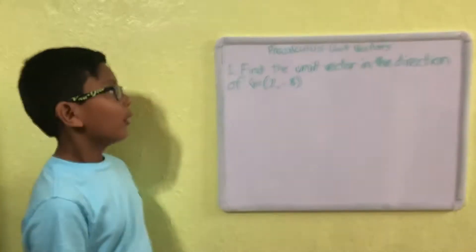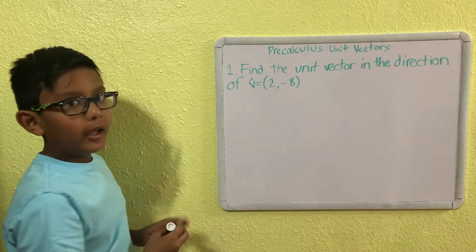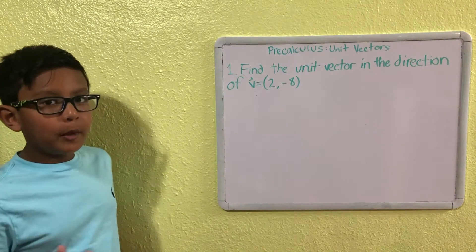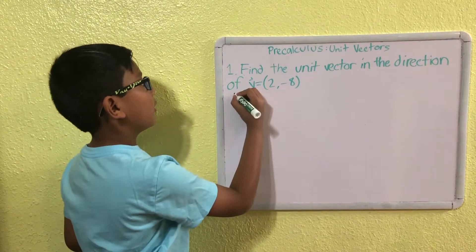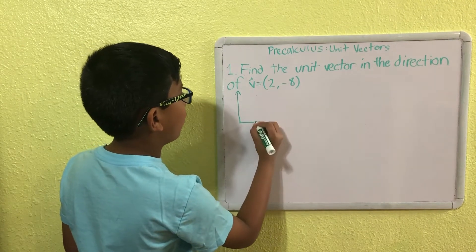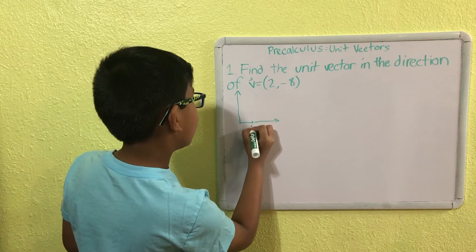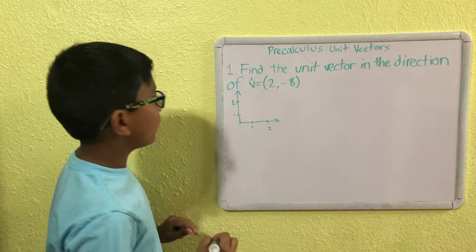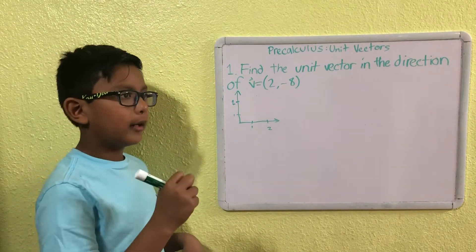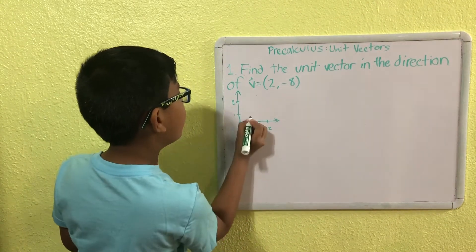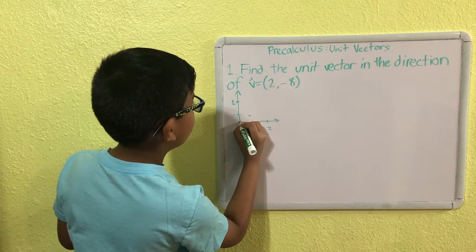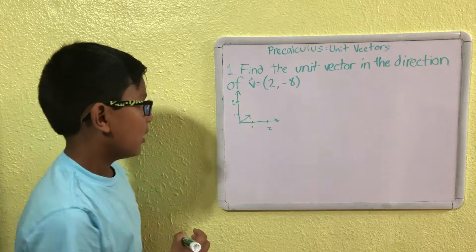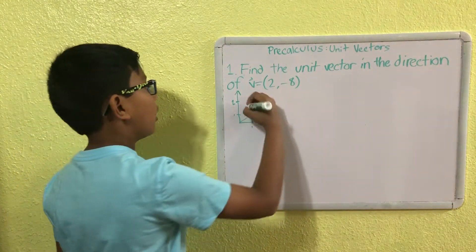Hi, this is Steven. Today we will be talking about pre-calculus. We will be covering unit vectors. A vector is basically just an arrow pointing to a point on the coordinate plane. Here's my coordinate plane — one, two, one, two. If I say I want the vector (1,1), the first step is you make a point at (1,1), then you draw an arrow pointing to it. This is a vector — we can call it vector A.